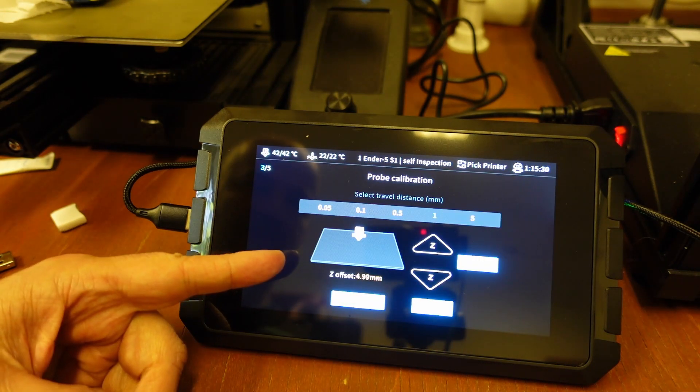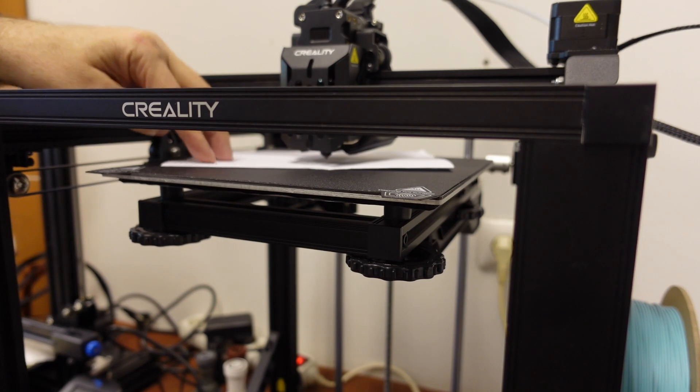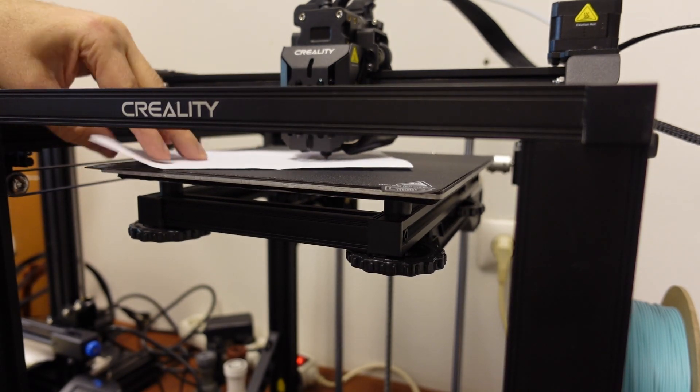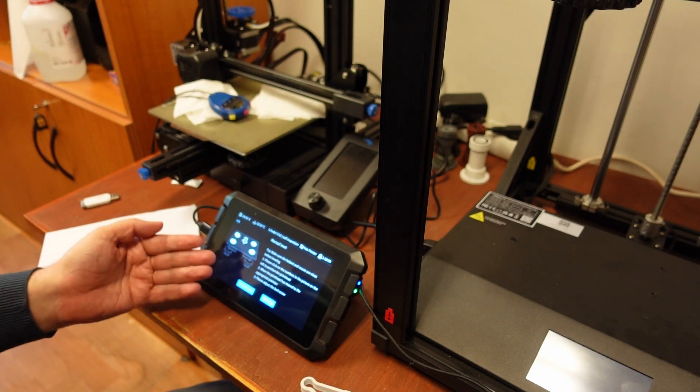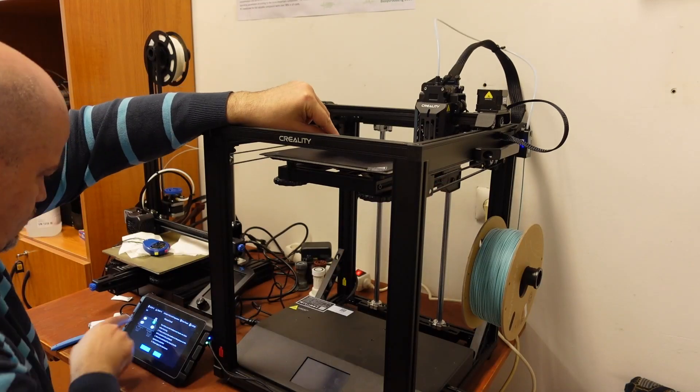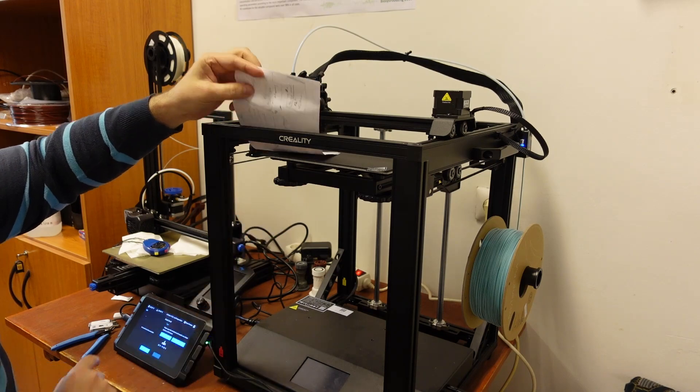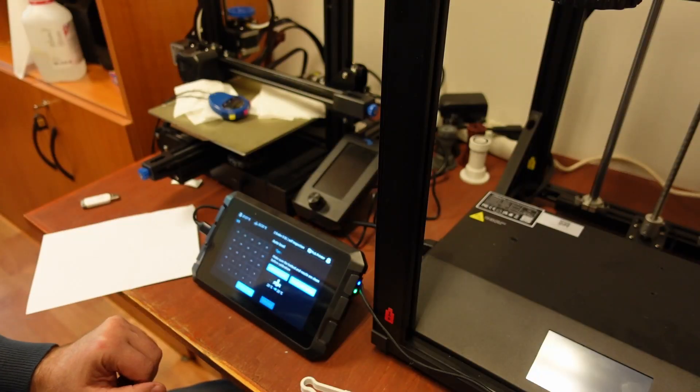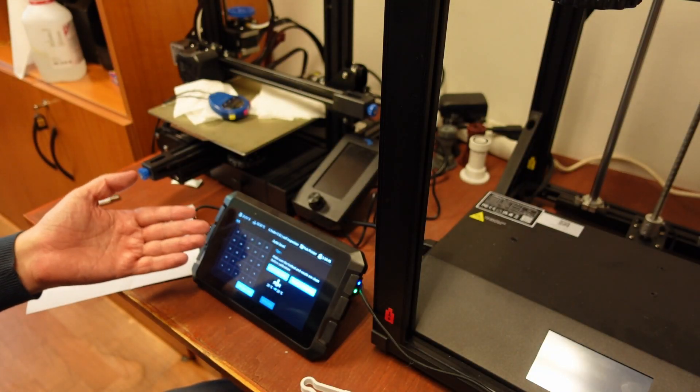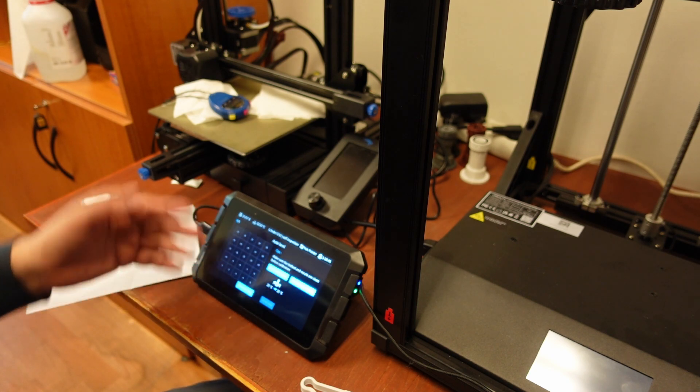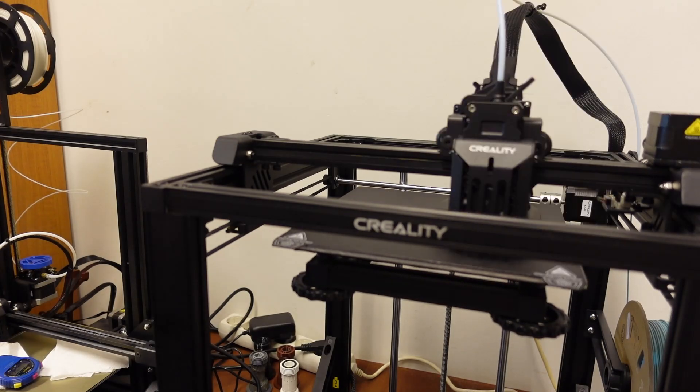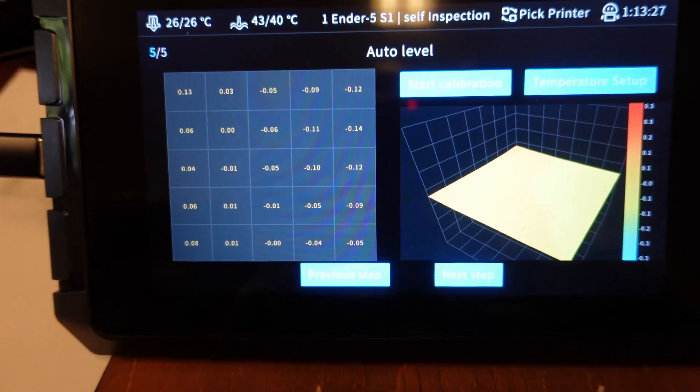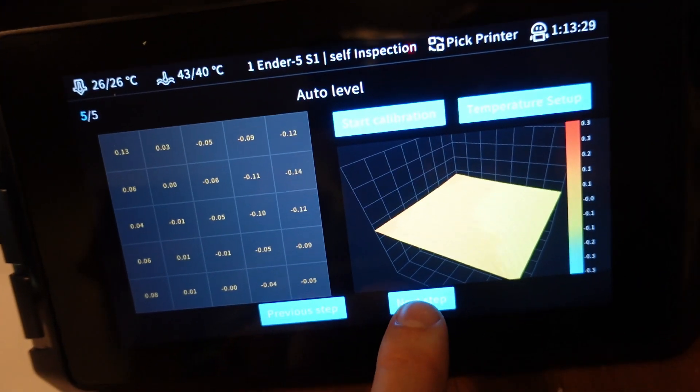Now I have to set the Z offset. Next step is this assisted manual bed leveling. And auto leveling will do the job. We will see at the end the offset mesh, is it really leveled or not. The offset mesh not perfect but it will do the job. Next step.